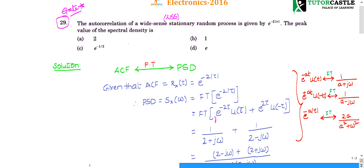Before solving, recollect the Fourier transform pairs: e^(−at)u(t) has Fourier transform 1/(a + jω); e^(+at)u(−t) has Fourier transform 1/(a − jω); and e^(−a|t|) has Fourier transform 2a/(a² + ω²). This last formula is similar to the given question.